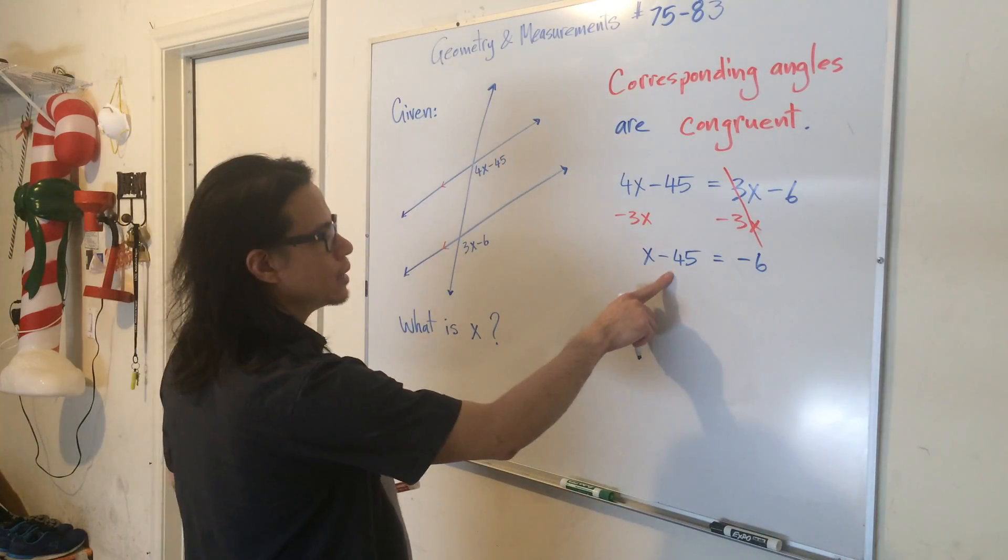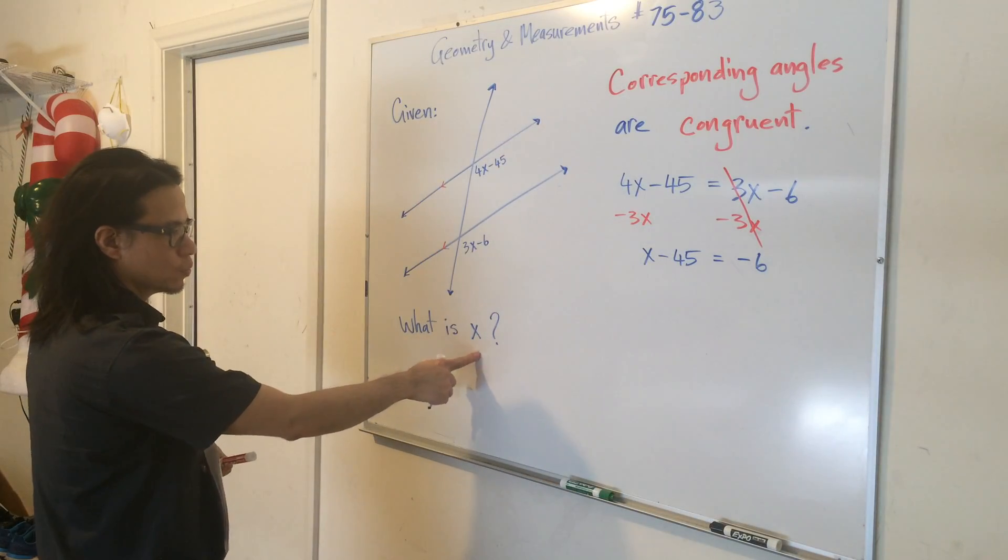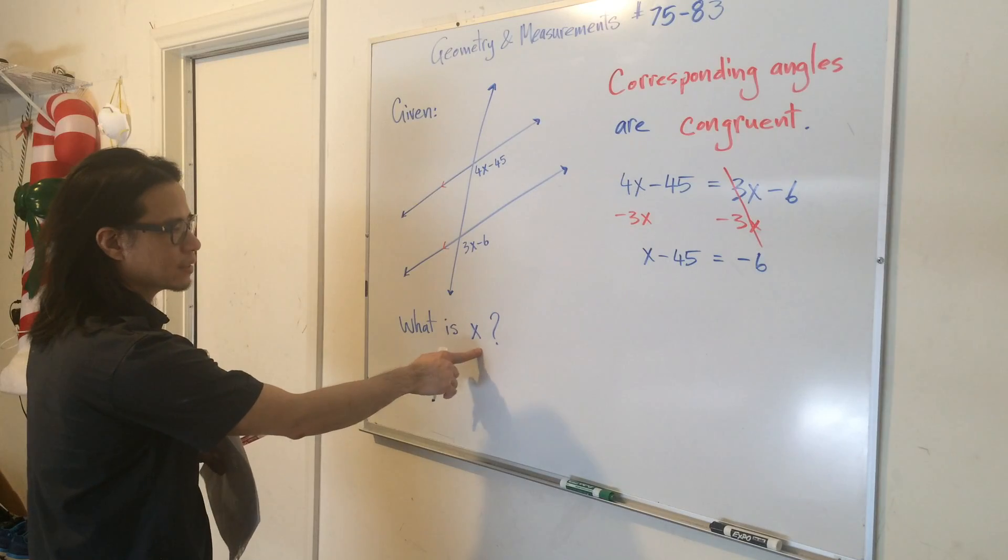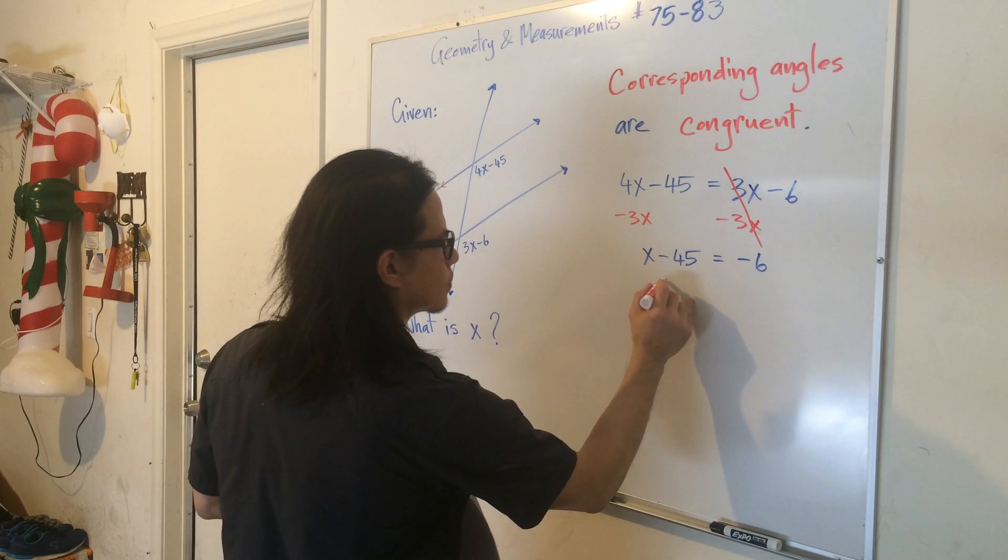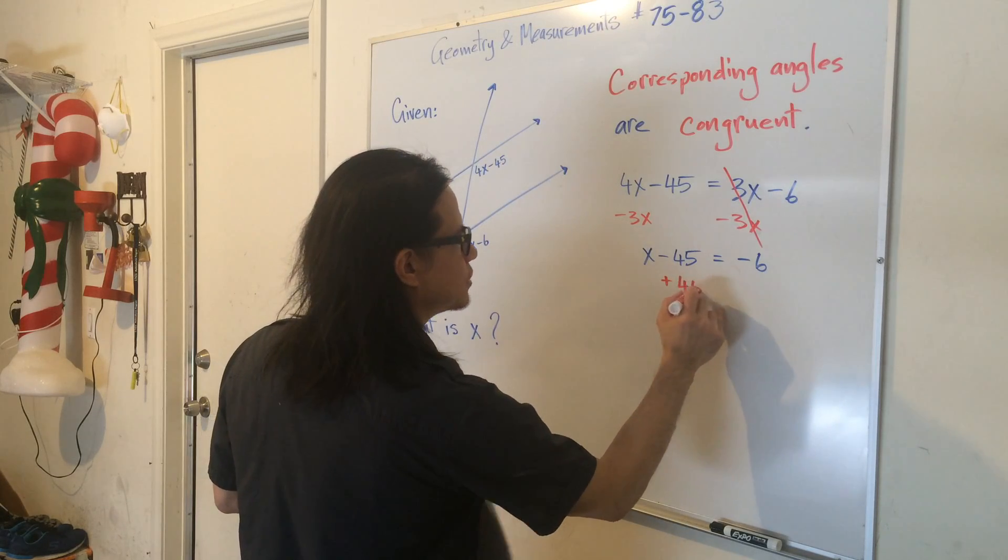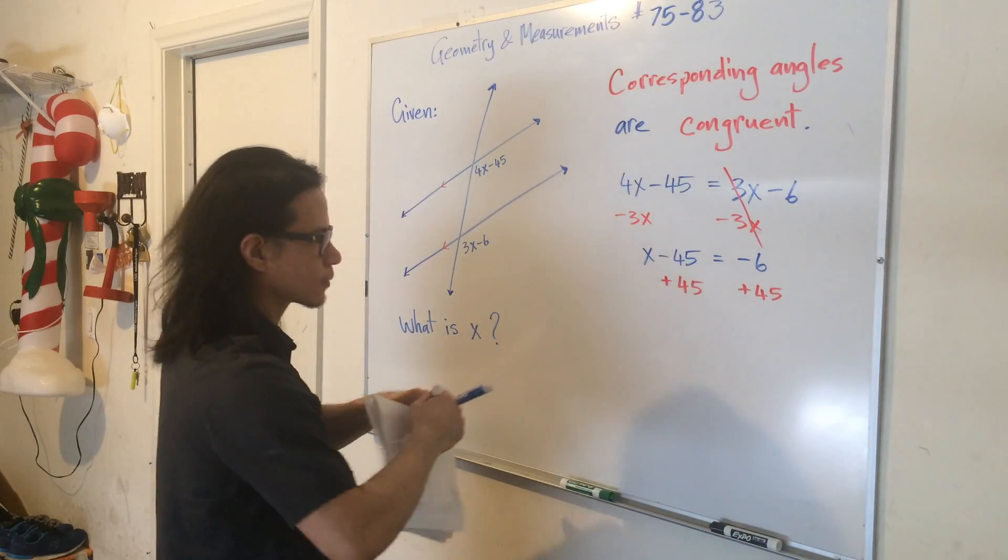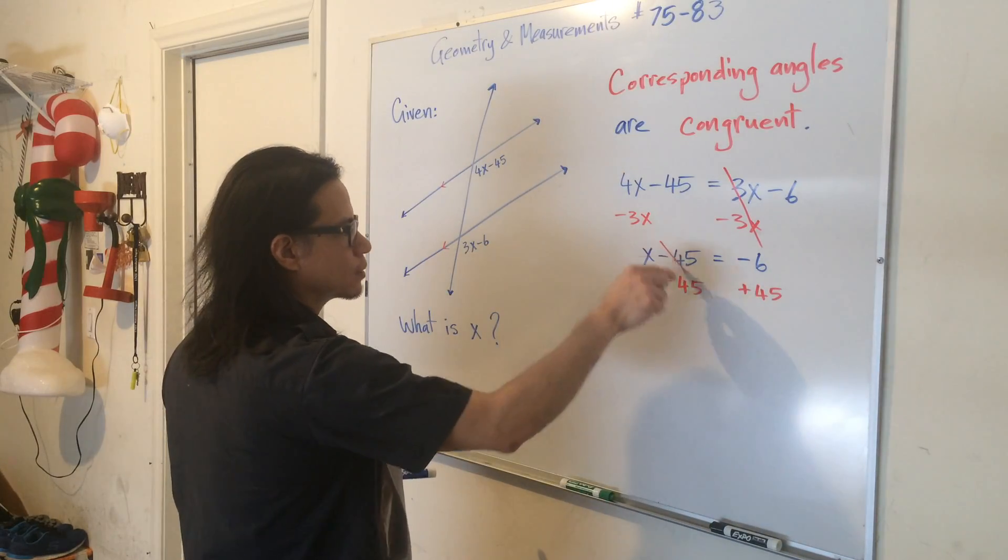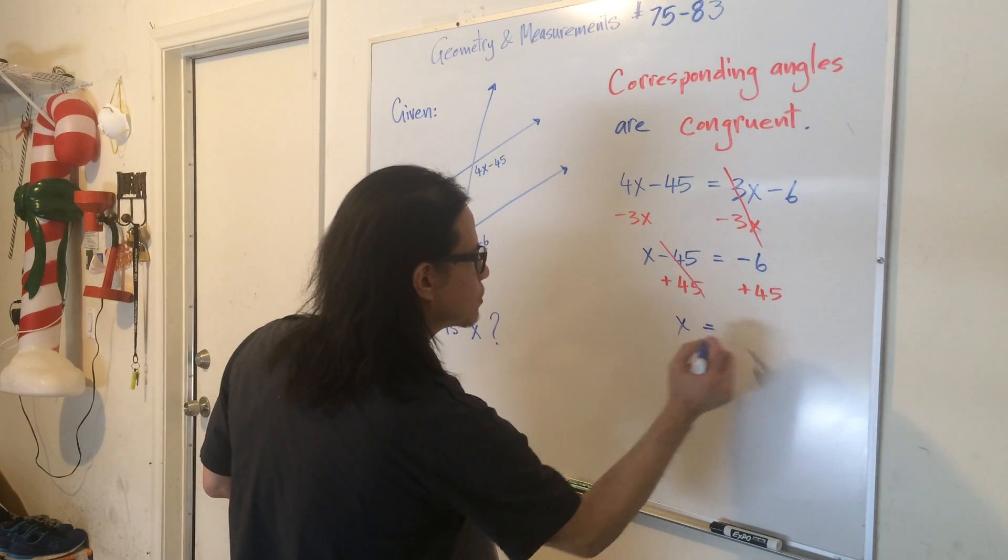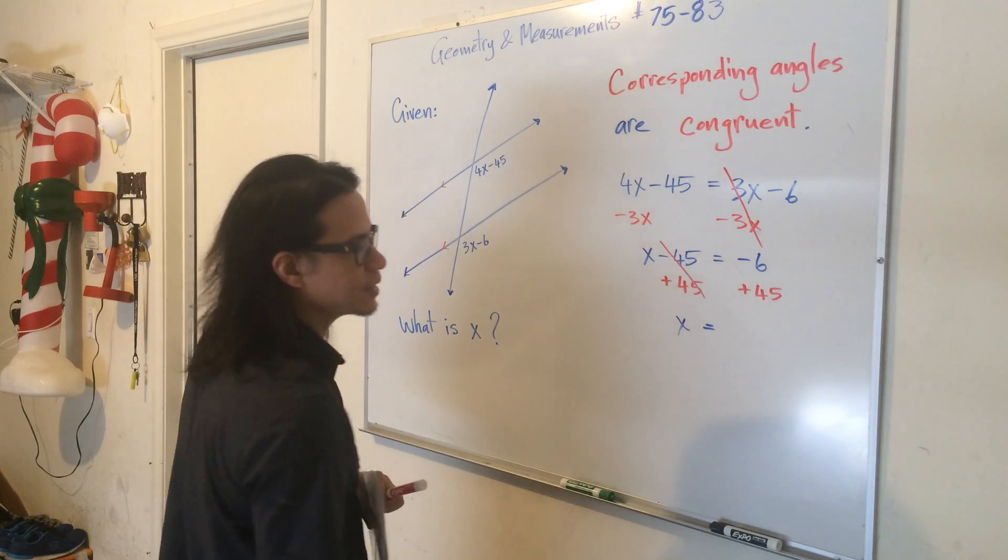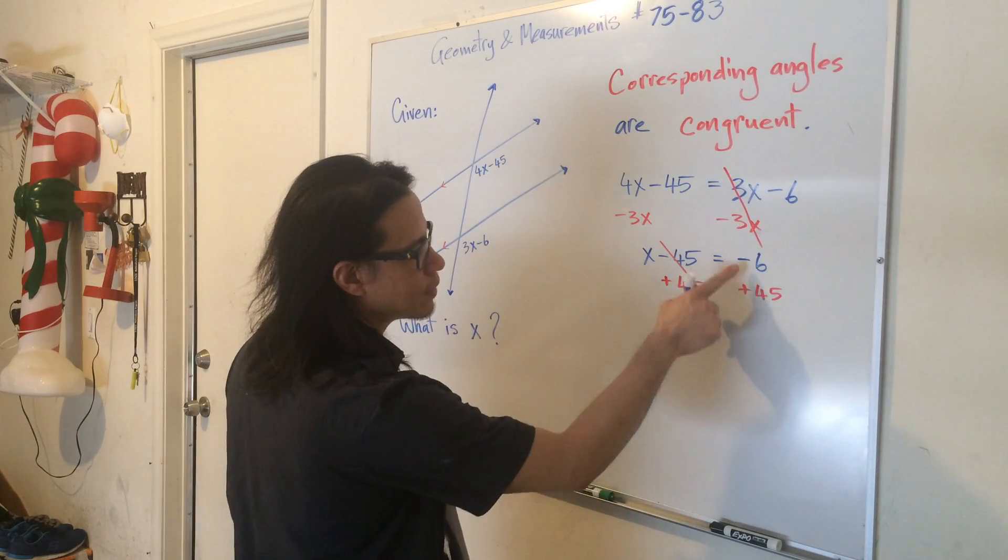Next step would be to get rid of the 45, which is what we're trying to do to get what x is. So what's the opposite of minus 45? Right, plus 45 to both sides. So this cancels out. X then is equal to negative 6 plus 45. You can think of it as 45 minus 6.